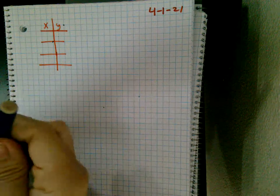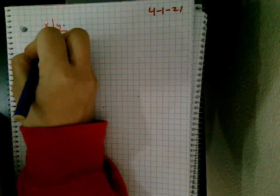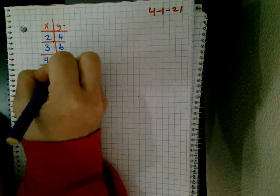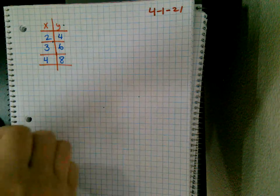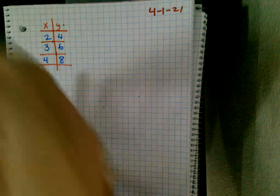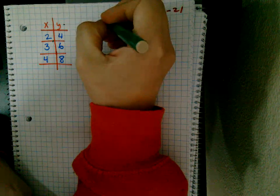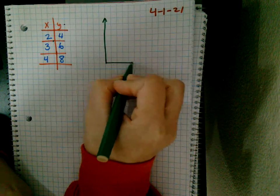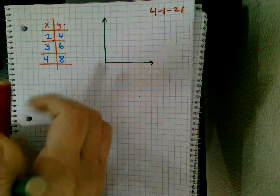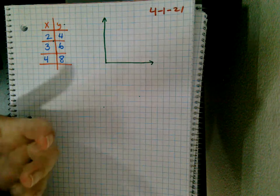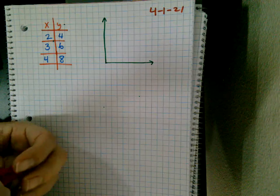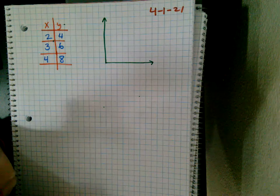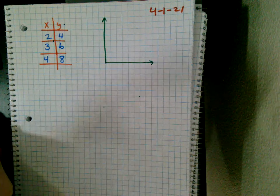Okay, so if I give you the points 2, 4 — 3, 6 — 4, 8, and I'm asking you to graph this, you create a basic graph. Karolina, you're right, maybe.